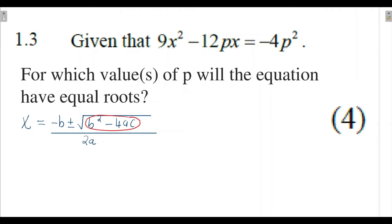The discriminant tells us about the nature of the roots of our quadratic function. The discriminant is that expression b squared minus 4ac — the value you obtain by substituting your a, b, and c values.